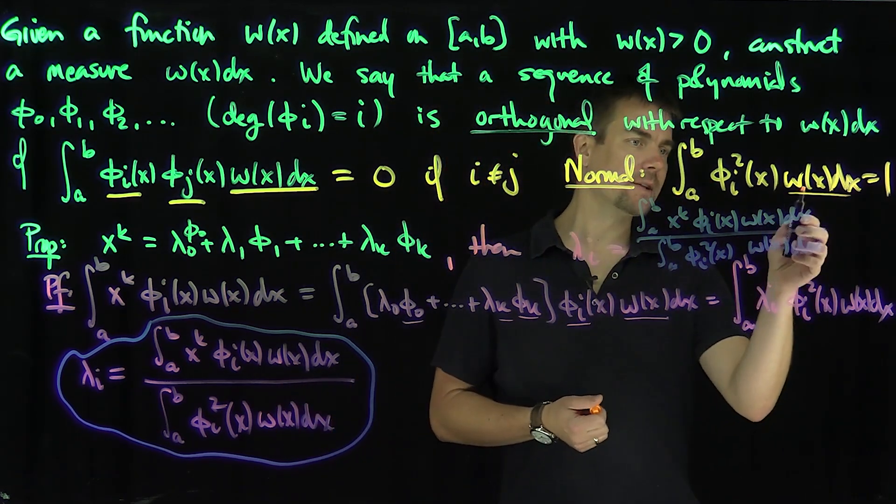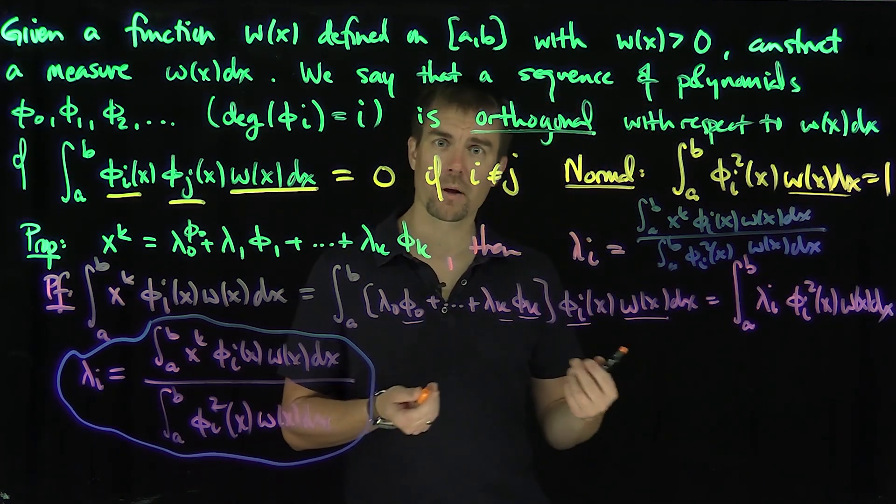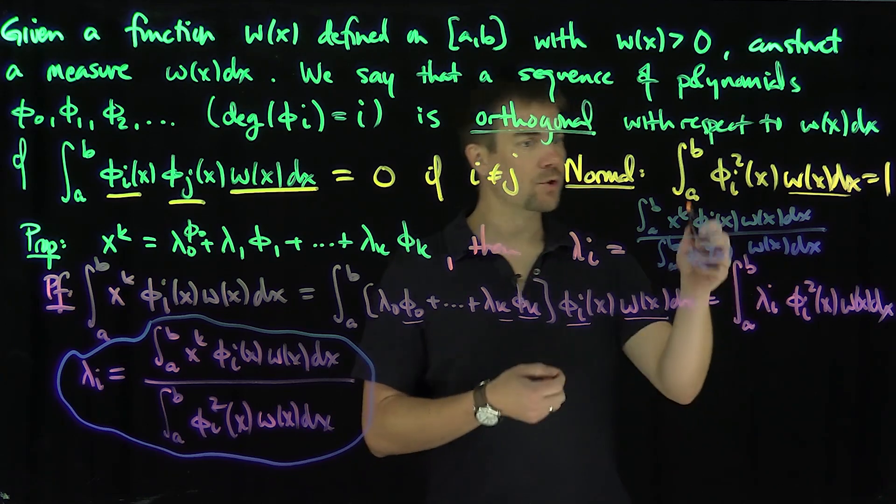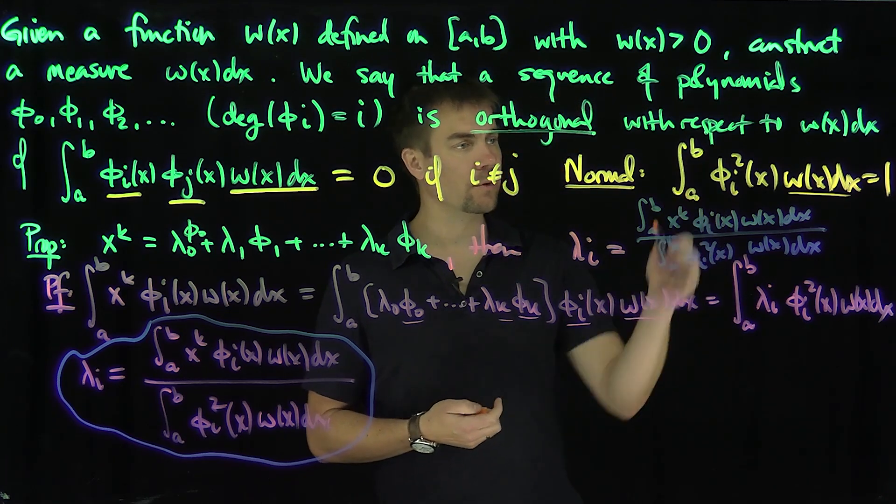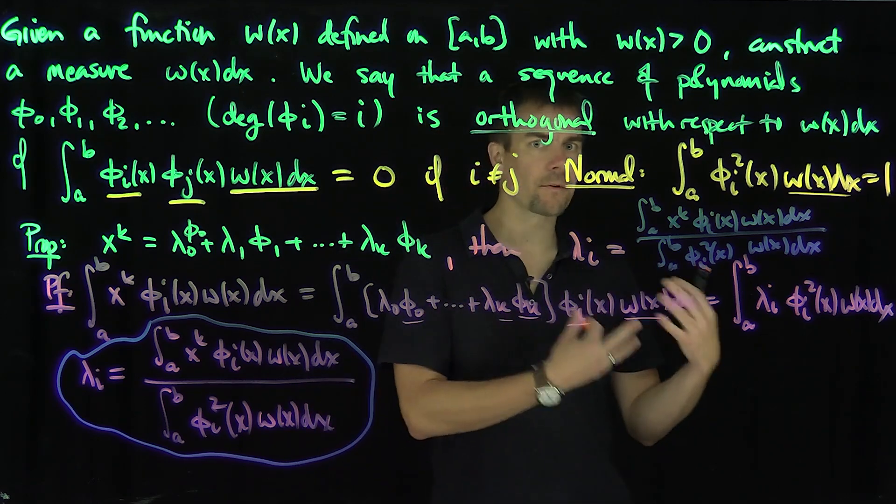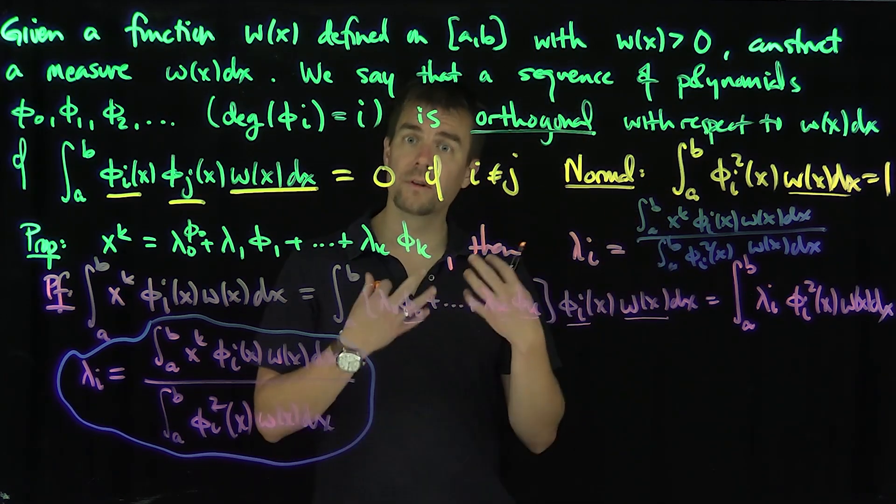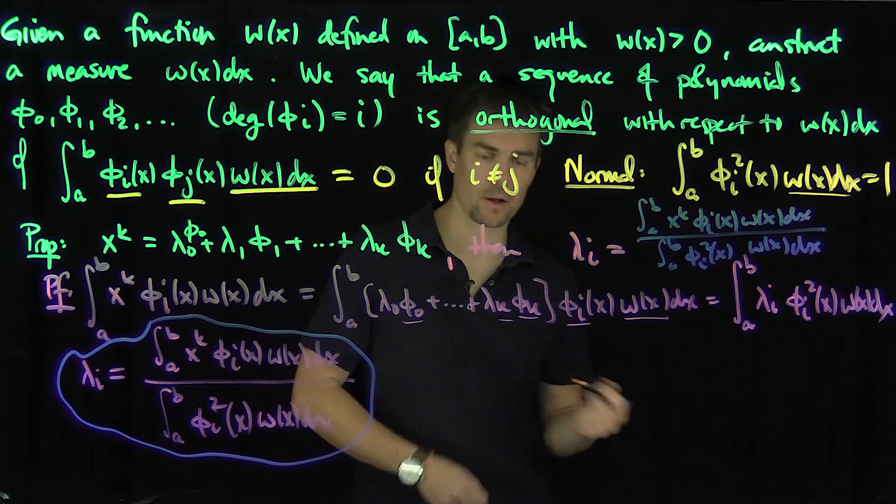If your weight is proportional to one over the square root of one minus x squared, you get the Chebyshev polynomials. And of course, you can let these things go to infinity. If you go from zero to infinity with respect to a Gaussian measure, you get the Hermite polynomials. There's lots of other classes of special functions which occur in differential equations, which is why we want to develop a broad theory for studying these orthogonal polynomials.